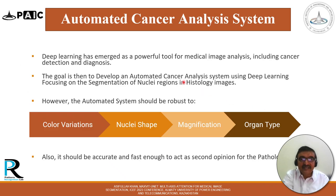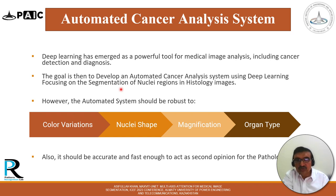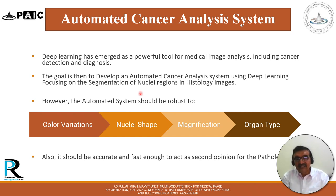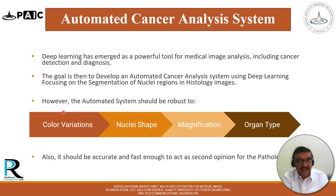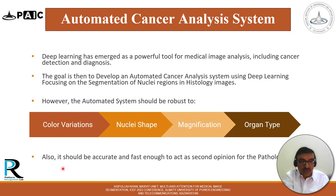We need an automated cancer analysis system, and for that purpose deep learning has emerged as a powerful tool for medical image analysis, including cancer detection and diagnosis. The goal is to develop an automated system using deep learning, focusing on segmentation of nuclei regions in histopathology images, which are very complex in nature. The system should be robust to color variation, variation in nuclei shape, variation due to magnification, and variation due to organ type, as well as accurate and fast enough to act as a second opinion for the pathologist.